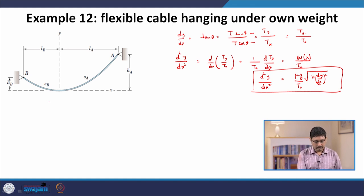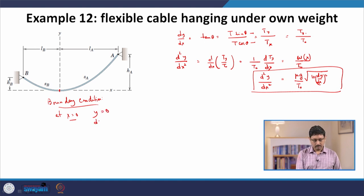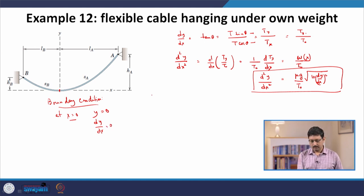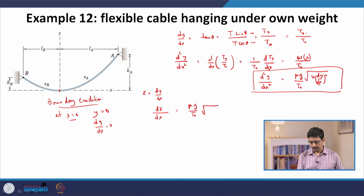To solve this equation we need boundary conditions. We choose the origin at the middle, the lowest point of the rope, so at x = 0: y = 0 and dy/dx = 0. To solve, we make the substitution z = dy/dx, converting this to a first-order differential equation and applying variable separation.